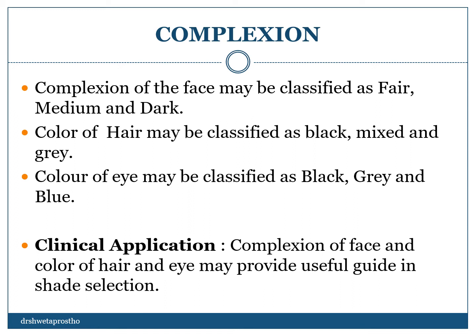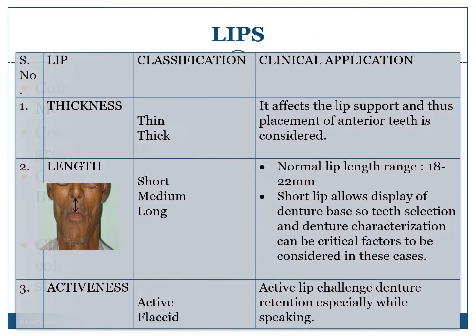Lips are a very important part to be observed. Three things we have to note: lip thickness, lip length, and lip activeness. Lip thickness can be thin or thick and it affects lip support — the condition in which the upper teeth hold the upper lip up and forward, which is influenced by the placement of anterior teeth. There is also the term lip fullness, which is influenced by the thickness of the labial flanges. The examiner may ask you the difference between lip support and lip fullness.